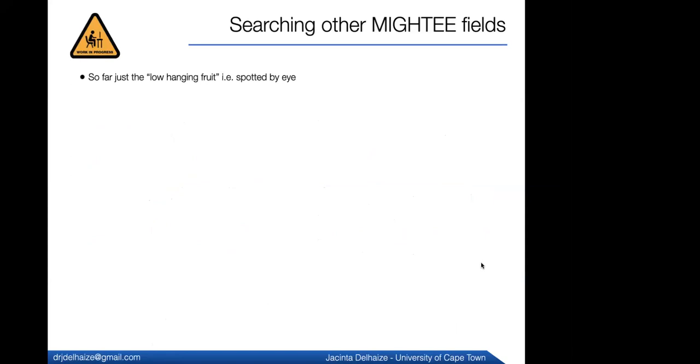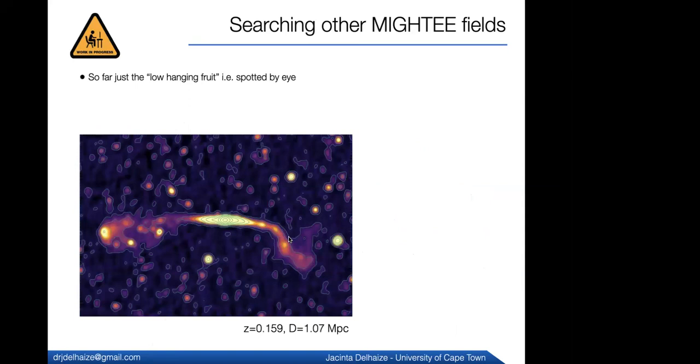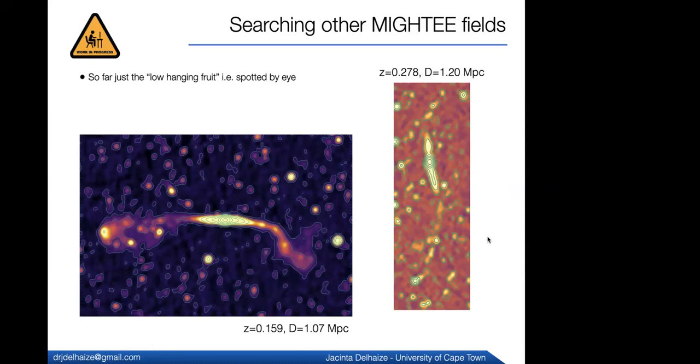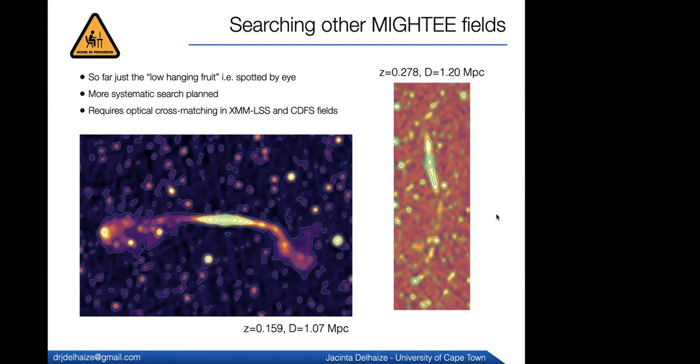The final thing I'll say is that I've proposed a master's project to search the other MIGHTEE fields for GRGs. So hopefully we get a student to take that up. Okay, so I will end there. Just to summarize, we've talked about how MeerKAT is a really excellent vessel for galaxy evolution surveys. We talked about the LADUMA survey, which is a narrow deep H1 survey of the ECDFS field. The DR1 is nearly ready, and we found more than 130 sources in the field. Then we have the MIGHTEE survey, which has both a radio continuum and an H1 component. It extends over 20 square degrees.